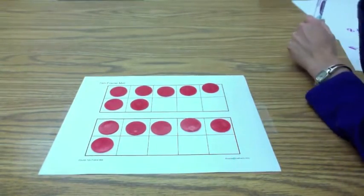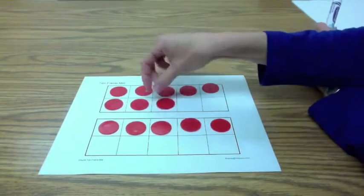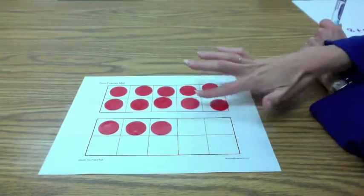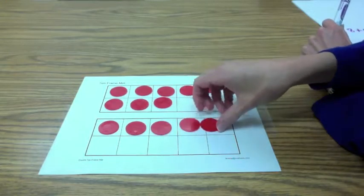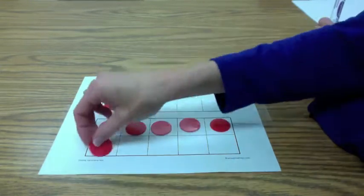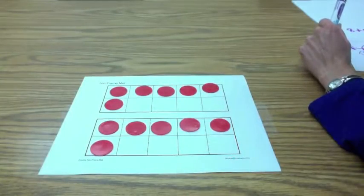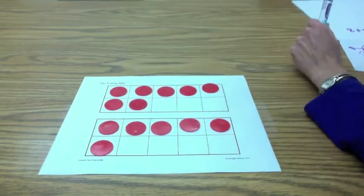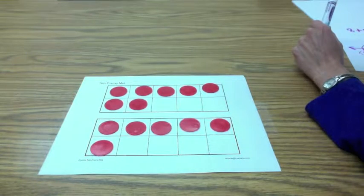So you thought about this in two different ways. You thought about this as a make 10 strategy. We call that a make 10 strategy. And then you also thought about it as a double. You could move this one down here. 6 plus 6 is 12, and one more is 13. Great.